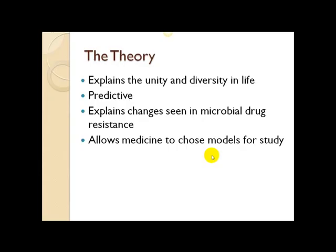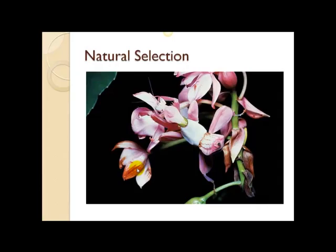The predictive nature of evolutionary theory is very strong. For example, we see changes in the microbial community through drug resistance. MRSA — methicillin-resistant Staphylococcus aureus — is a particularly bad one. There's also MDR-TB, multi-drug-resistant tuberculosis. These have happened since the advent of drugs, and microbes have evolved resistances through the same process of variation, selection, and time. This also explains where you came from and everything else on this planet. Medicine even chooses models based on evolutionary theory — which is why we study mammals and mice.